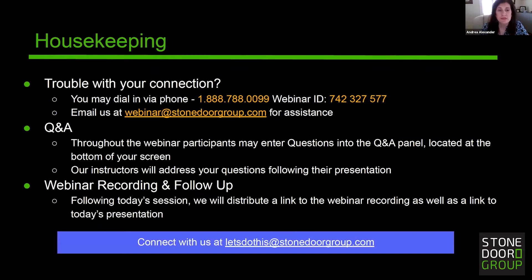A few housekeeping items. If you are experiencing audio issues, you may dial in using the toll-free number provided on the screen — that's 1-888-788-0099 and our webinar ID is 742-327-577. If you need assistance, please contact a member of the Stone Door Group technical support team at webinar@stonedoorgroup.com and our team members are standing by ready to assist.